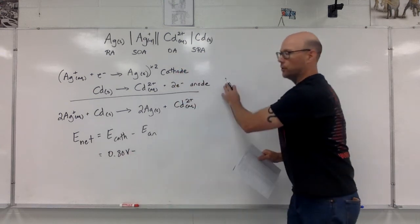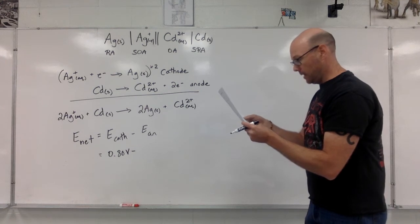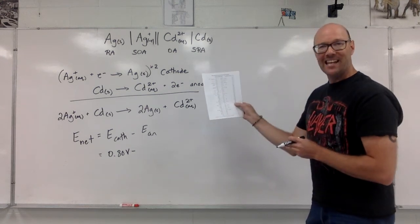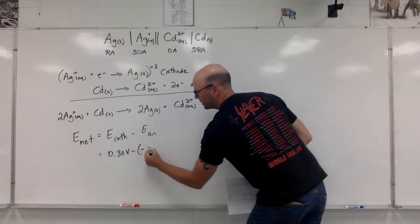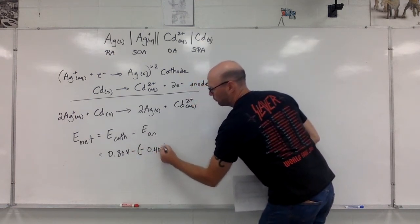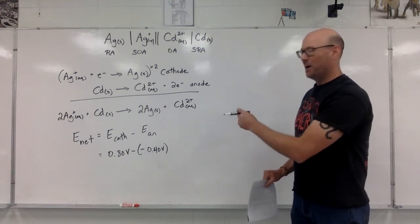Subtract. Now, the anode, I'm looking up this line. The anode, the cadmium line, is at negative 0.4. Minus, minus 0.40 volts. 0.80 minus, minus 0.40, 1.20 volts.